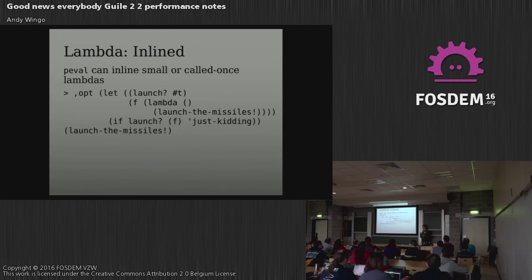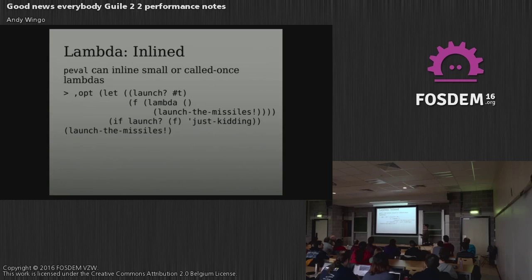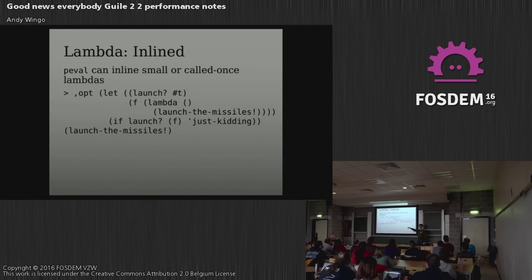The other way p-eval can transform lambdas is by inlining them. The heuristics are a bit tricky as to whether this happens or not, so if inlining is important to you, you need to check the result of optimize to see what the transformation is. In this case, with hash-t as the launch value, it folds to the value of applying the f procedure and inlines f. The code at runtime will call launch-the-missiles, but the wrapping lambda isn't there — it's been inlined.